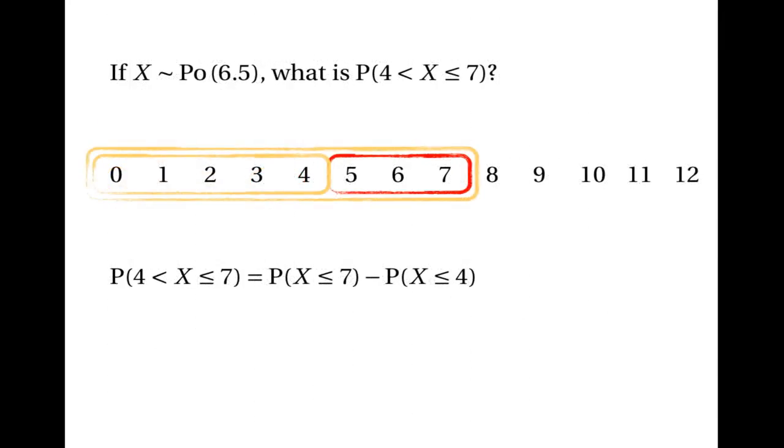So now we can say that the probability that x is greater than 4 and less than or equal to 7 is 0.6728 take away 0.2237, which turns out to be 0.4491.